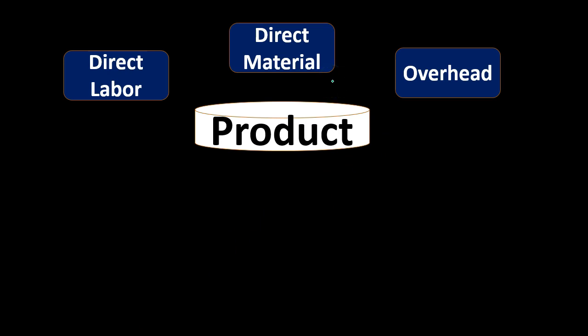Direct materials are pretty straightforward — this is going to be the material that goes directly into the units of inventory that we're creating. So if we're making guitars, the wood is clearly a direct material that we can assign specifically to inventory, and more specifically to whatever batch of inventory or unit of guitar that we are making.